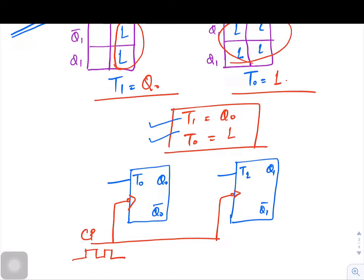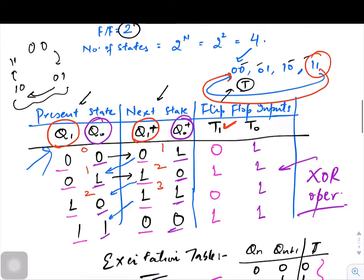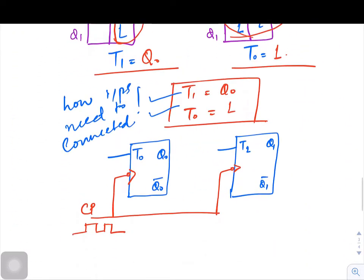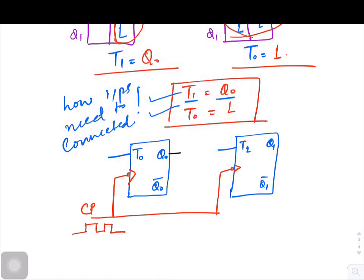How inputs need to be connected—that idea we get from this design procedure that we have followed over here. So the ultimate answers were here: my T1 is equal to Q naught, so what I have to do is there is simply a connection from this Q naught to T1.